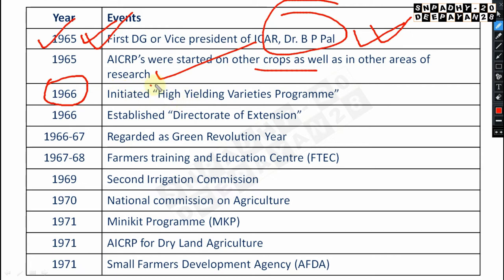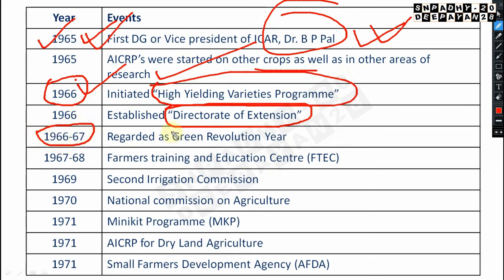In 1966, the High Yielding Varieties Program (HYVP) was initiated — very very important. Also in 1966, the Directorate of Extension was established. The period 1966 to 1967 is regarded as the Green Revolution year. The father of the Green Revolution is M.S. Swaminathan.